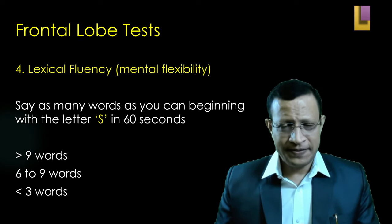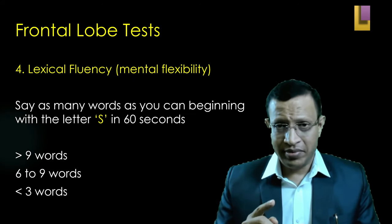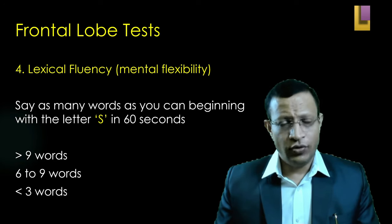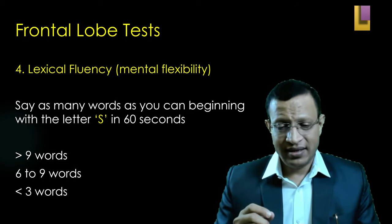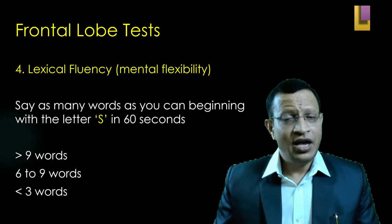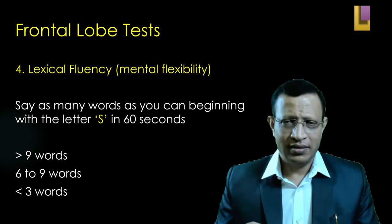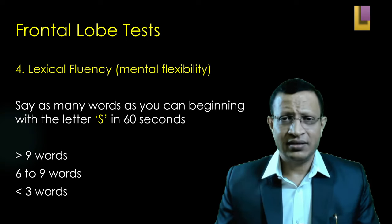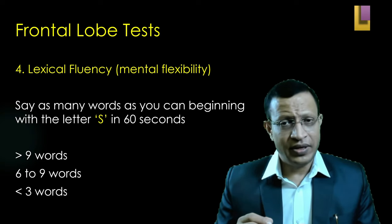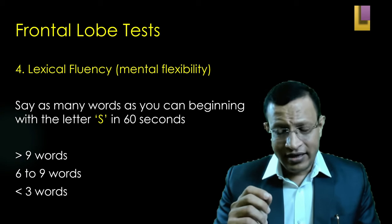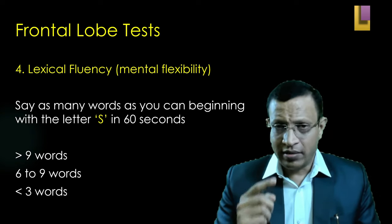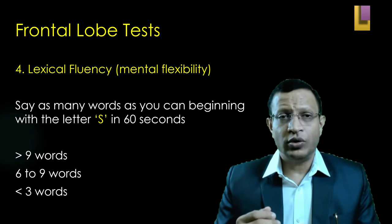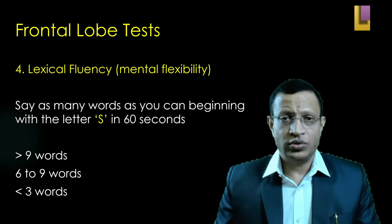Moving to the fourth test: lexical fluency. This is different from verbal fluency. In lexical fluency, you ask the person to produce as many words beginning with 'S' as possible in 60 seconds. If able to produce more than 9 words, that is normal. If 6-9, there is a mild deficit. Anything less than 3 words indicates a serious problem. Lexical fluency asks the person to produce as many words beginning with a given letter such as S or P.